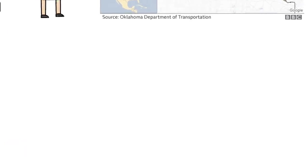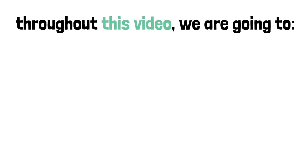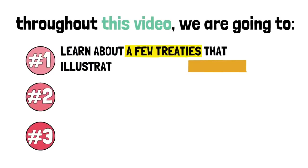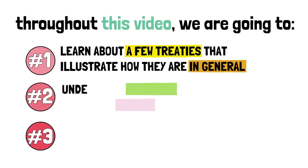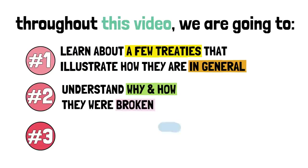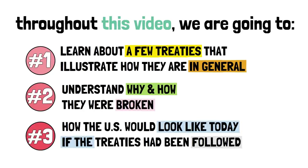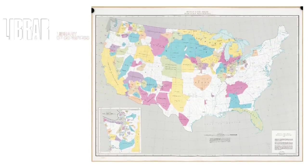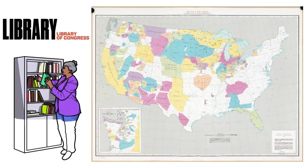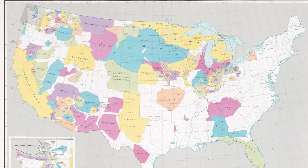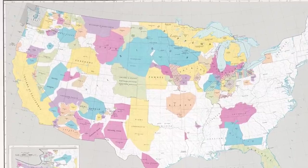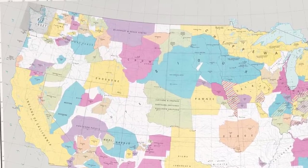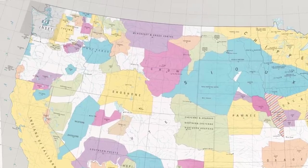We obviously can't go one by one through all of the over 300 treaties, so in this video we'll take a look at a few select treaties that properly illustrate how most of them were made and what they consisted of, why and how they were broken, and what the territory of the United States would look like today if they had in fact been upheld. This map from the Library of Congress shows us Indian land judicially established — lands in which an American Indian tribe proved their original tribal land occupancy. It's a lot, spread around the land and divided into many individual nations. Should early treaties have been followed, much of this land would have remained under Native control.